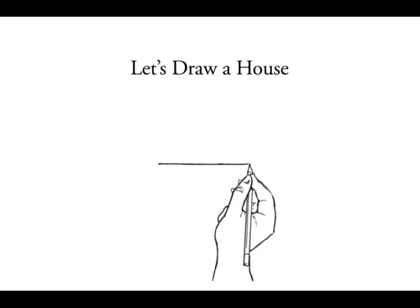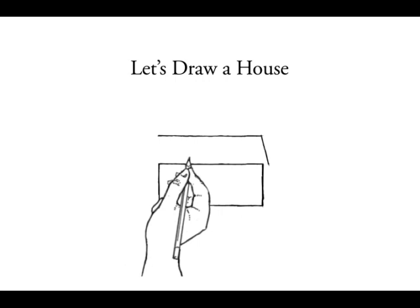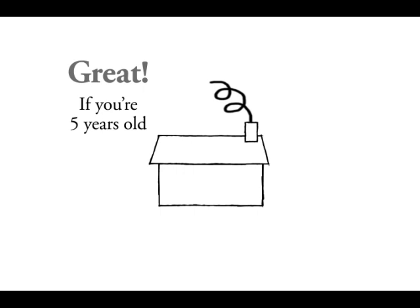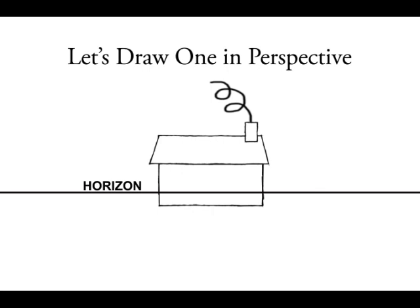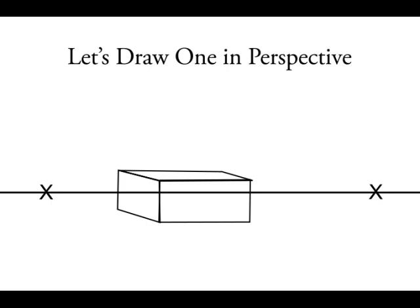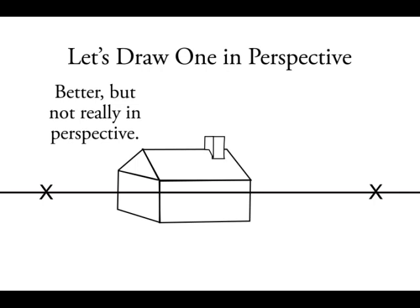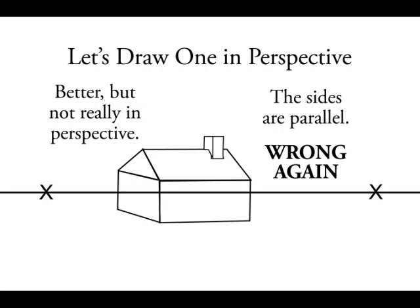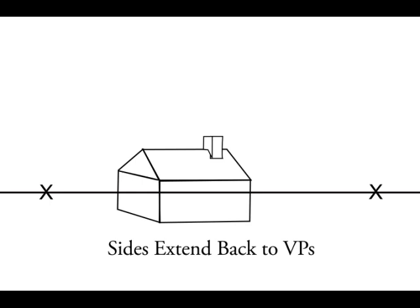Now, let's draw a house. Please tell me you can do better. Let's do a three-dimensional view. Like the box, the sides go back to the vanishing points.